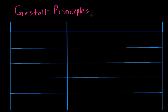The Gestalt Principles basically seek to explain how we perceive things the way we do. So why is it that we don't tell ourselves the basketball game is just a bunch of pictures, but rather that it's a fluid, realistic representation of a basketball game? There are several different laws or principles that the Gestaltists came up with, and we're going to look at each one and examine an example.